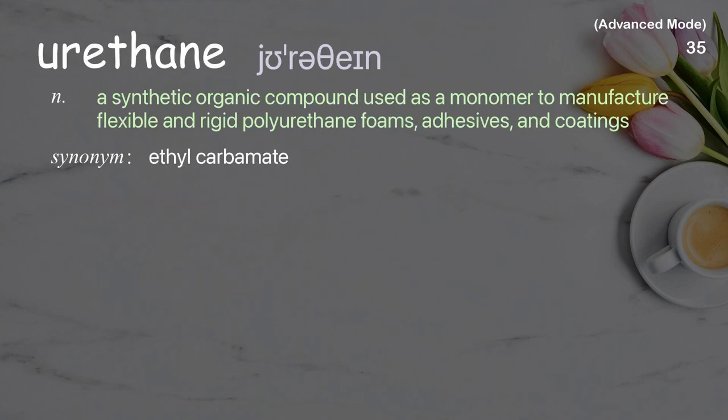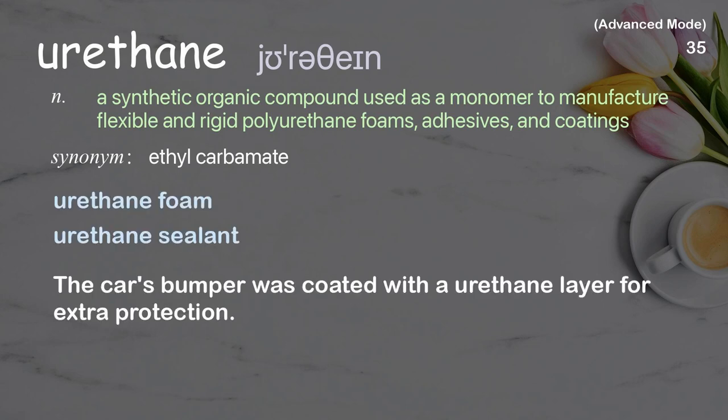Urethane: a synthetic organic compound used as a monomer to manufacture flexible and rigid polyurethane foams, adhesives, and coatings. Examples: urethane foam, urethane sealant. The car's bumper was coated with a urethane layer for extra protection.